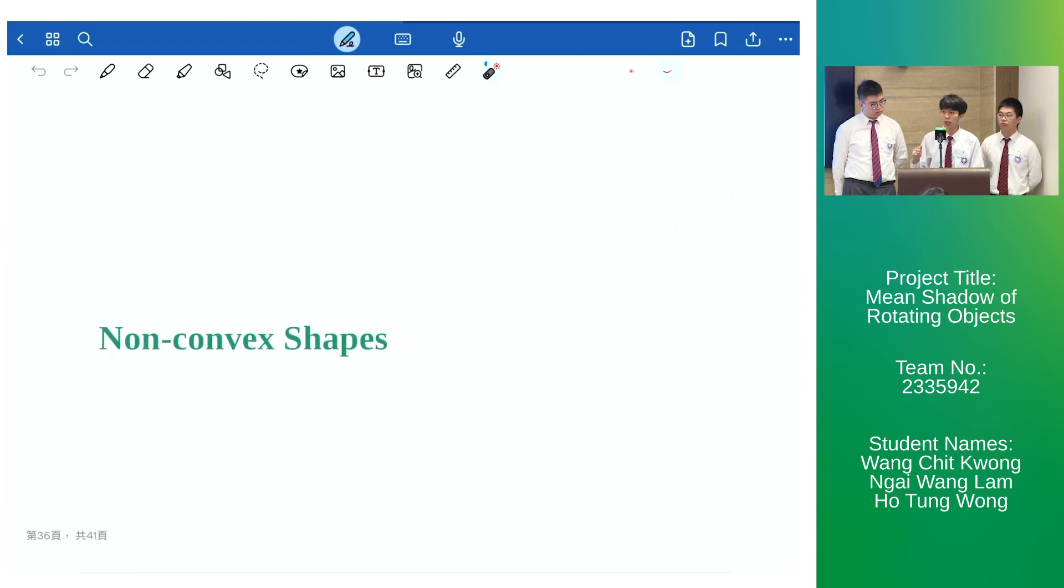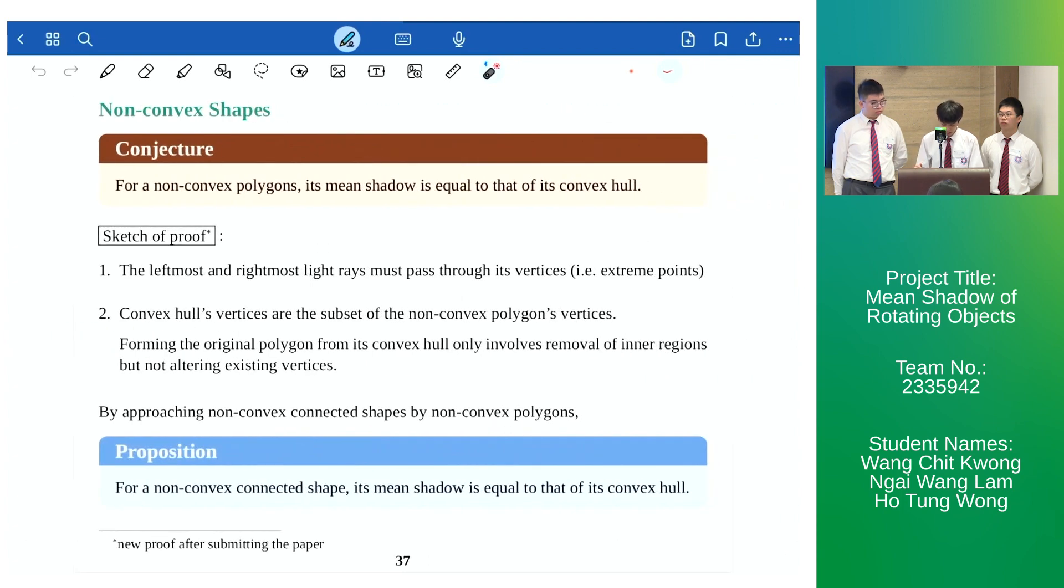Now we propose a way to deal with non-convex shapes. First of all, note that for a non-convex polygon, the mean shadow of it is equal to the mean shadow of its convex hull. We proved the conjecture after the submission of the paper and we include a sketch of proof here, but due to time constraints we won't cover it here. If you are interested you may ask us later on.